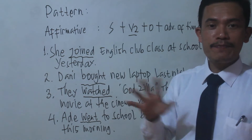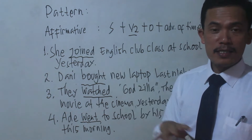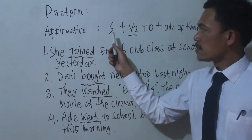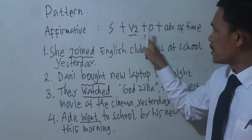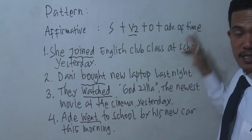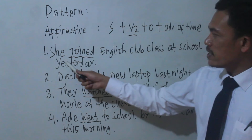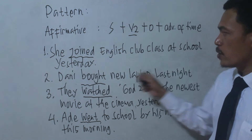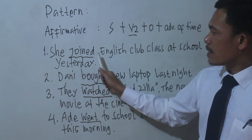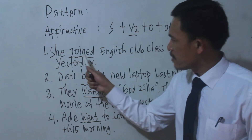Here is the pattern to formulate simple past tense. The first formulation is the affirmative or positive statement. The formula is: Subject + verb 2 + object + adverb of time. The adverb of time is usually placed at the end of the sentence. For example, number one: 'She joined English club class at school yesterday.' — Dia bergabung kelas grup bahasa Inggris di sekolah kemarin.